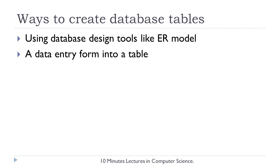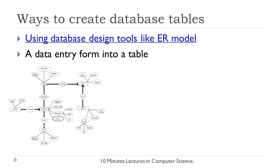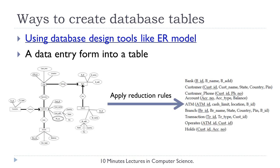A database table can be created in different ways. For example, we can use an ER data model to design a database, or we can collect the data entry form and convert them into a table. In the case of database design using ER model, the data is collected and modeled as a database using an ER diagram in entity relationship model. The reduction rules can be applied on the diagram to convert that into a set of conceptual schemas, something like this.